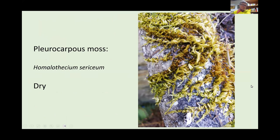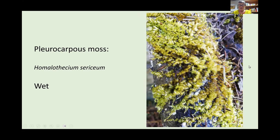This is a picture of a pleurocarpous moss — a very common one, Homalothecium sericeum. When it's dry, all the leaves are pressed onto the branches and the branches stick up away from the main stem. As soon as you add water — I just sprayed it — you can see it's much more fluffy: the leaves and branches are opening out, giving it a completely different look. This is something to be aware of when trying to identify bryophytes — they can look incredibly different when dry compared to when wet.